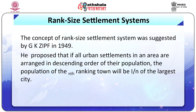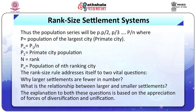Rank size settlement systems: the concept was suggested by G.K. Zipf in 1949. He proposed that if all urban settlements in an area are arranged in descending order of their population, the population of the nth ranking town will be 1/n of the largest city. Thus the population series will be p, p/2, p/3, ... p/n, where p equals the population of the largest city, pn equals p1/n, p1 is the primate city population, n is the rank, and pn is the population of the nth ranking city.